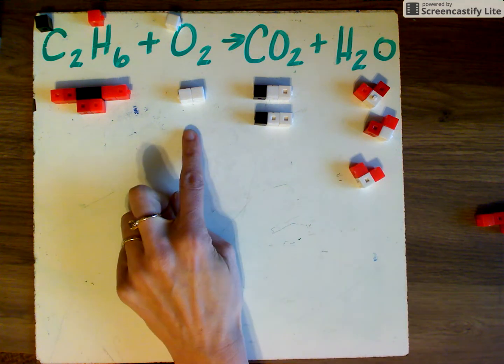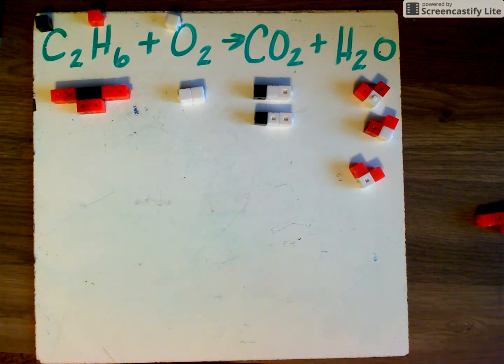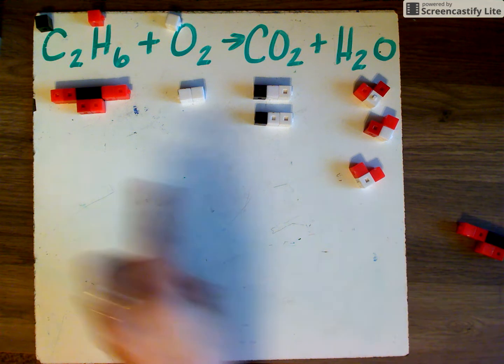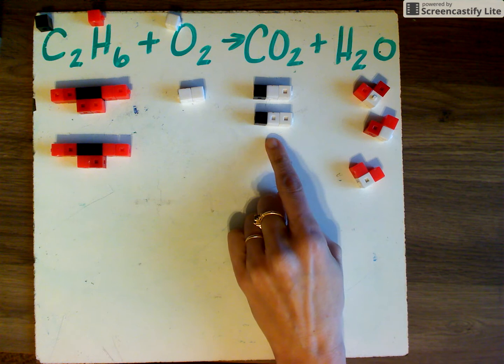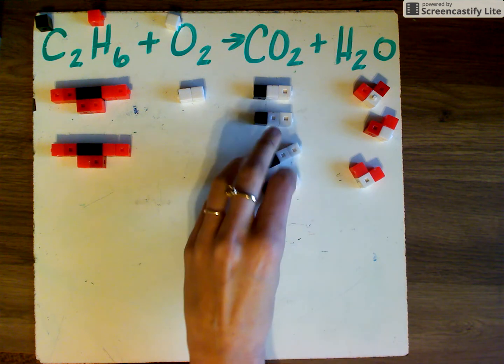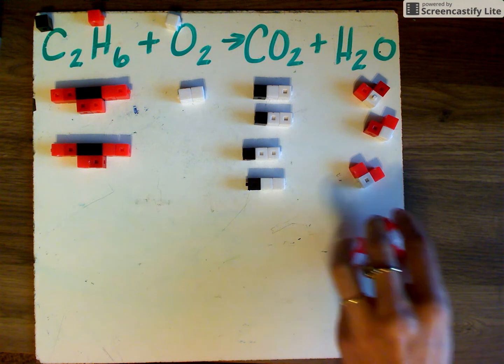That means we need seven oxygen atoms in the reactants. However, because oxygen is always in a pair, we can only get an even number of oxygens at a time. We can achieve this by multiplying the other coefficients by two. So that means what we need is two of this one. We need to multiply this by two. And we need to multiply this by two.